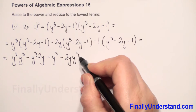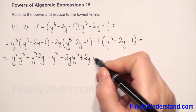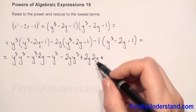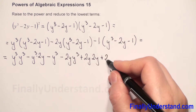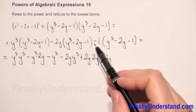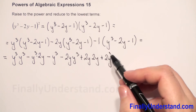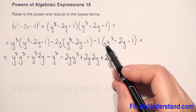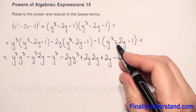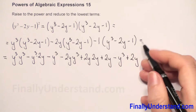Next, negative times positive gives negative 2y times y³. Negative times negative gives positive 2y times 2y. Negative times negative gives positive 2y times 1, which is 2y. Now for the negative 1 before the last parenthesis — multiplying by 1 doesn't change the value, so we only change the signs.